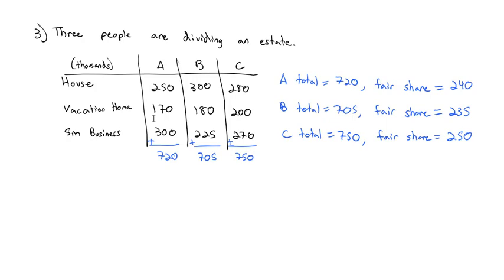Okay. Now that we know what everybody's fair share is, we will award each item to the highest bidder. The house goes to B, the vacation home goes to C, and the small business goes to A. It's nice this time everybody got something. Sometimes somebody walks away with nothing but cash, but the cash offsets the fair share, and so it works out. So it looks like A receives the small business, which has a value of $300,000. A said a fair share was $240,000. So A has to offset that and pays the difference, $60,000, to the pot.